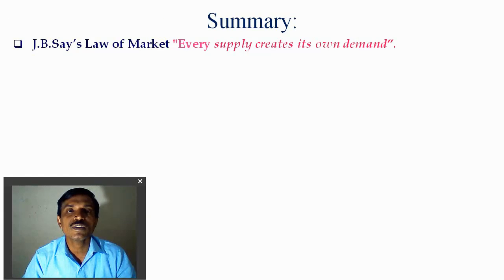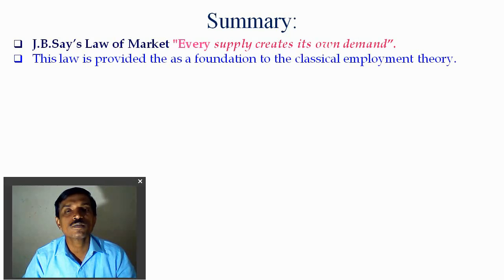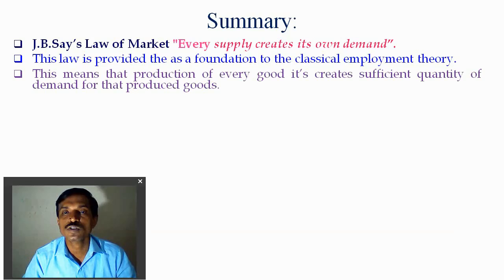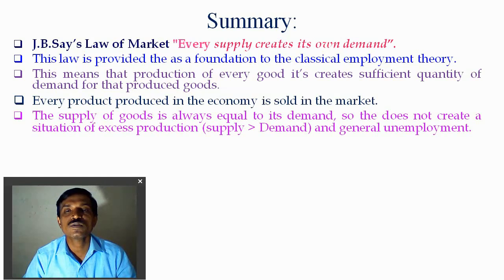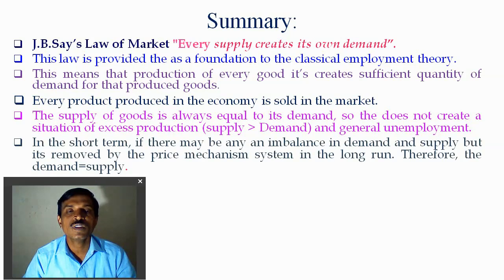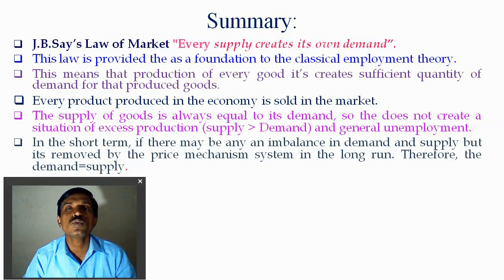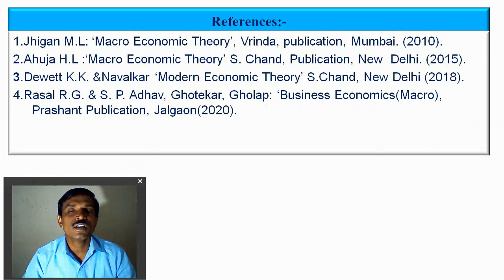Summary of the theory: J.B. Say's Law of Market says that every supply creates its own demand — supply equals demand. This law provided the foundation for classical economic theory. This means the production of every good creates a sufficient quantity of demand for those goods, and every production produced in the economy is sold in the market. The supply of goods is always equal to demand, so it does not create the situation of excess production, overproduction, or general unemployment. In the short term, if there is any imbalance in demand and supply, it is removed by the price mechanism. In the long run, demand and supply equal each other.